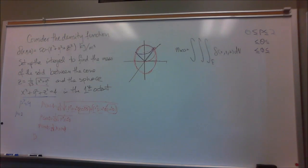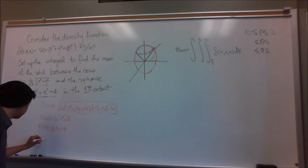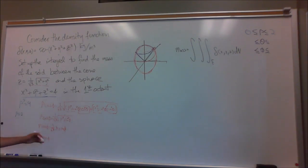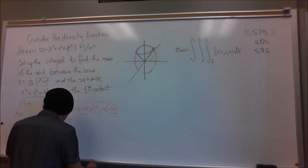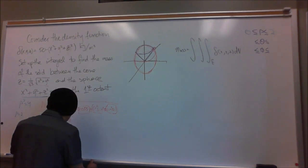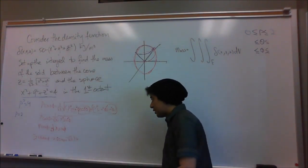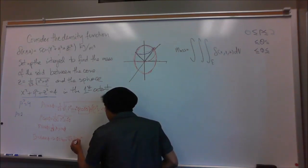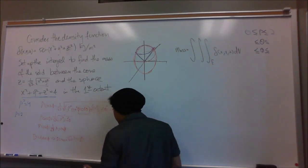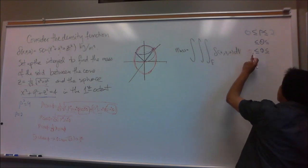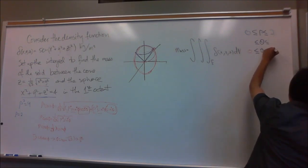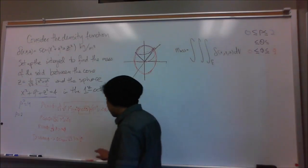Dividing both sides by cosine phi gives us root 3 equals sine phi over cosine phi, which is just tangent phi. To solve for phi we take the inverse tangent, so phi equals the inverse tangent of root 3, which equals pi over 3. Those are our limits for phi: 0 to pi over 3.